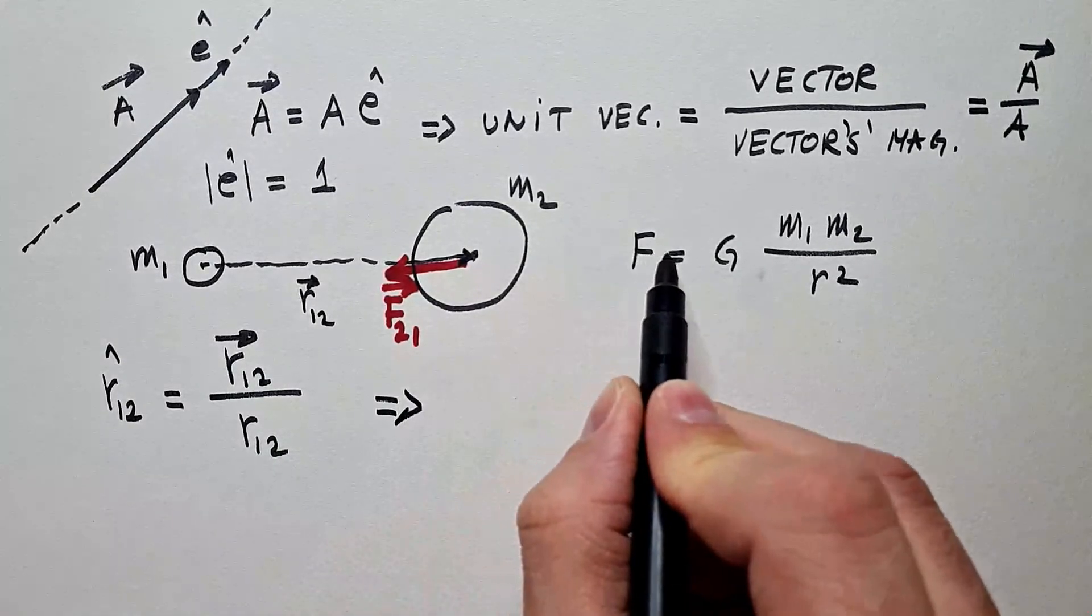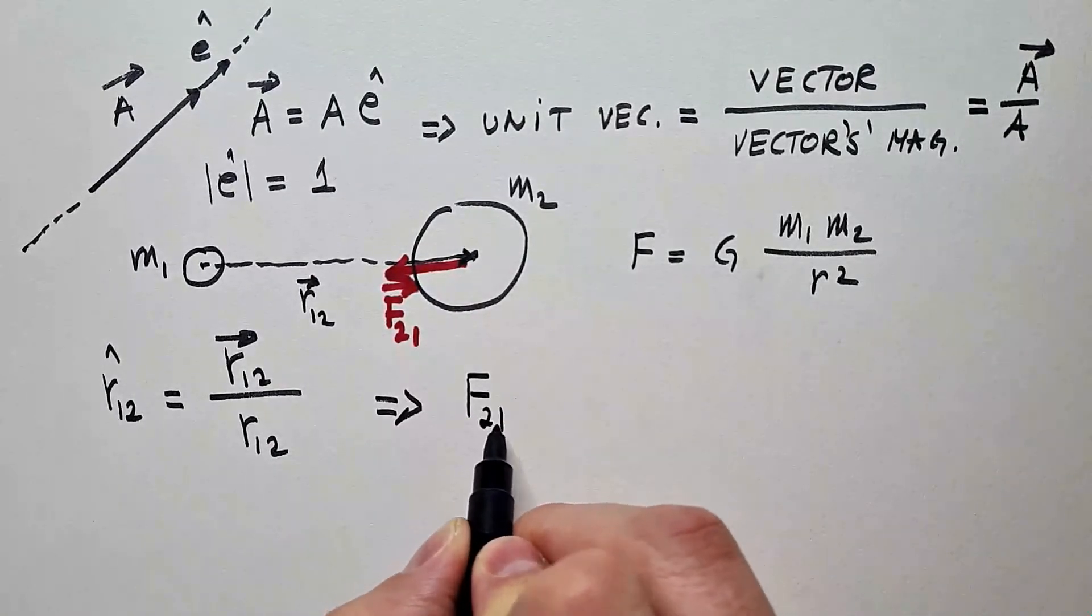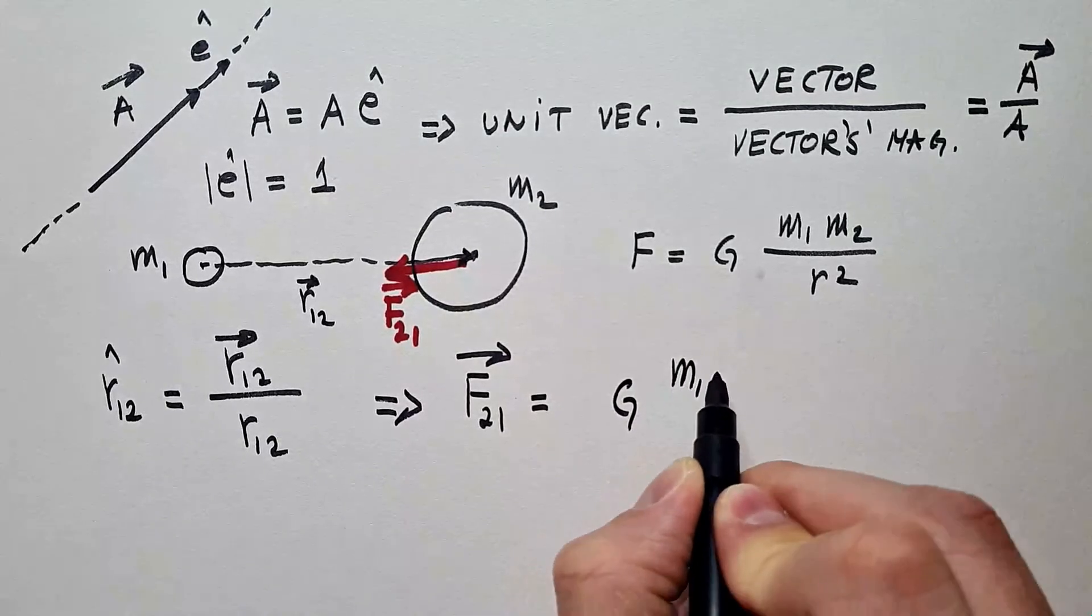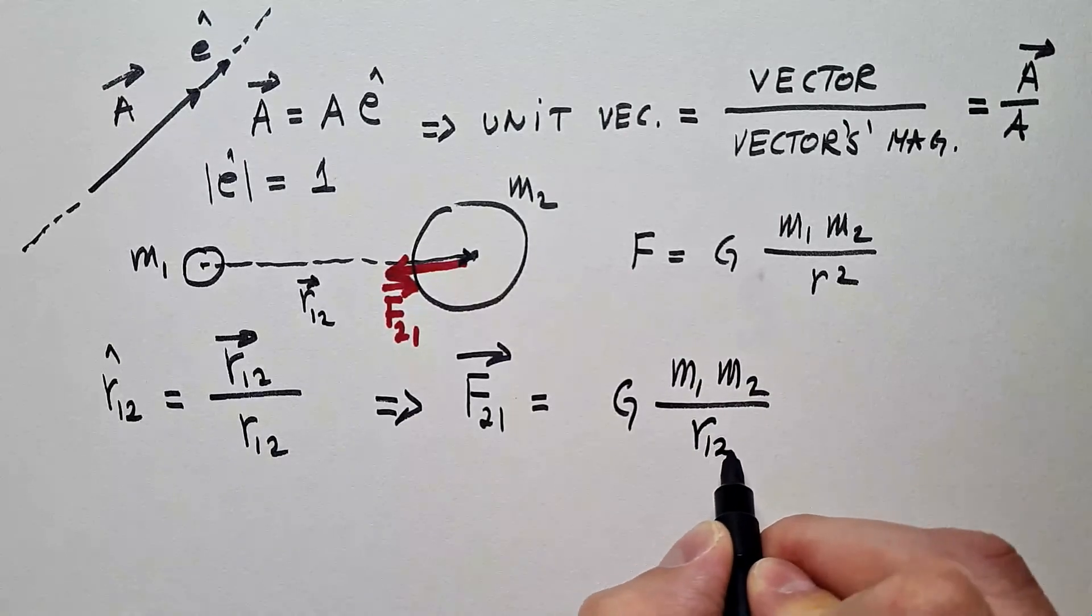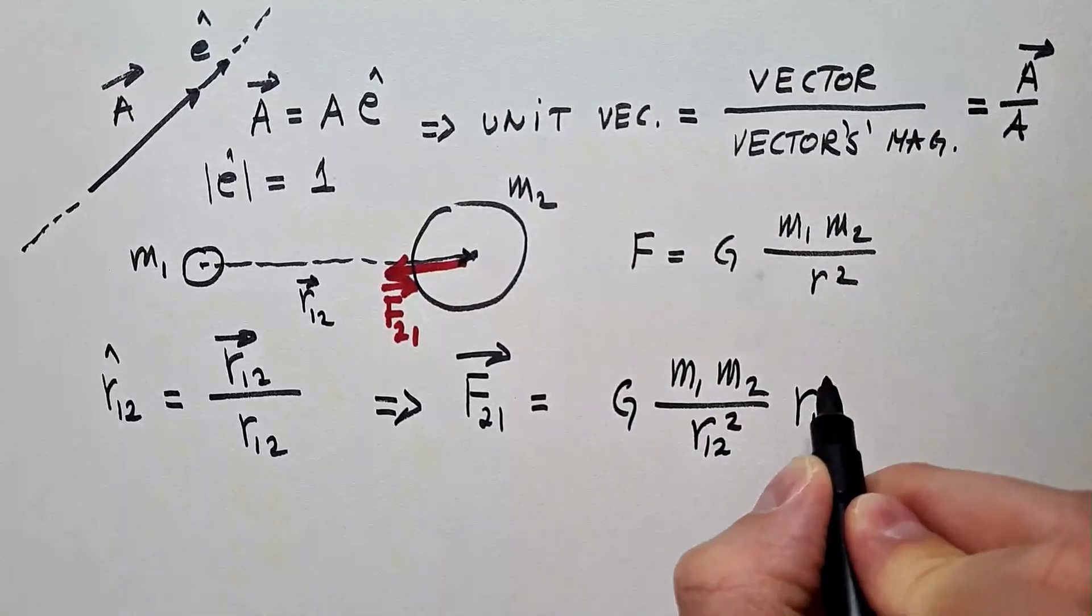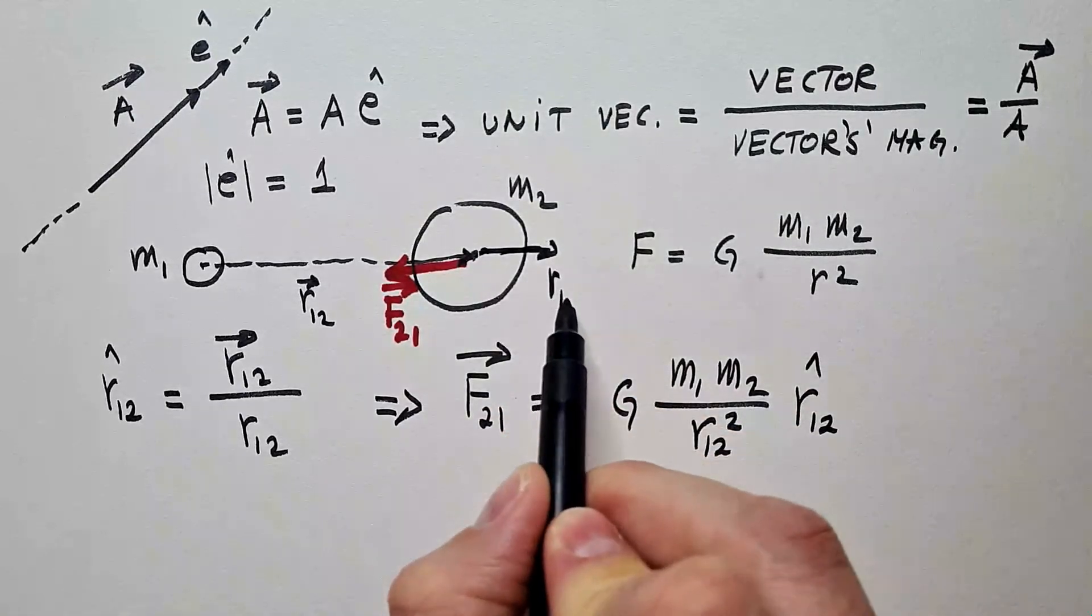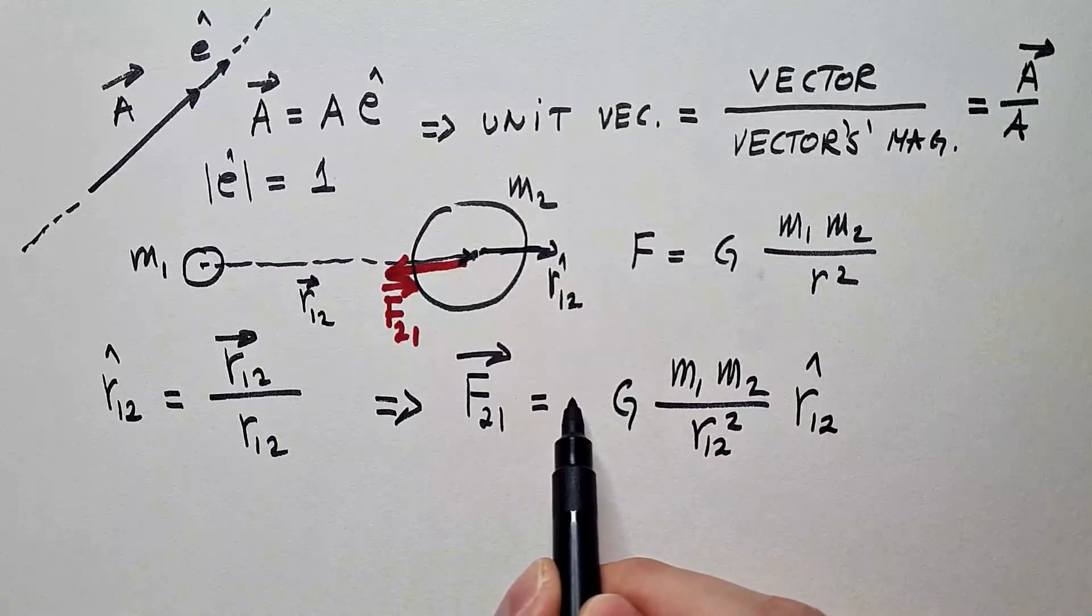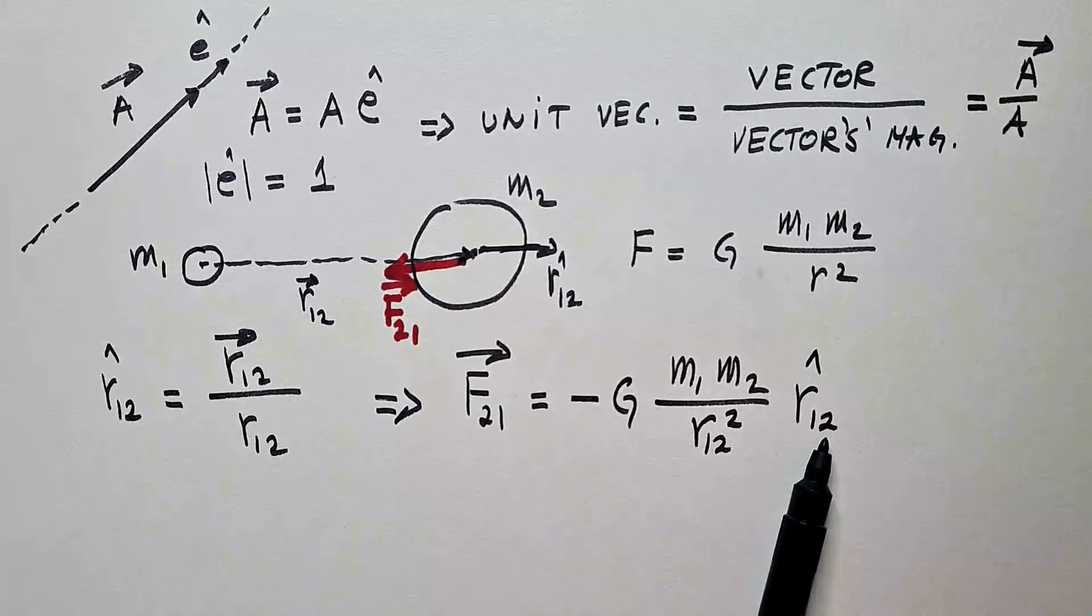Now, I can go ahead and write this in vector form, namely, force F₂₁ is equal to magnitude, that stays the same, G M₁ M₂ over R₁₂ squared, times this unit vector R₁₂ kappa, but notice, notice that the force is in the opposite direction of this vector, so I have to put here minus. And this is usually how you see Newton's law of gravity in vector form.